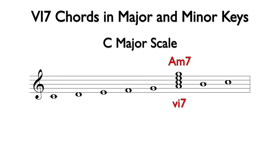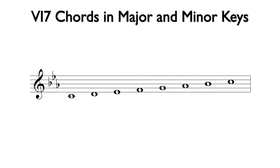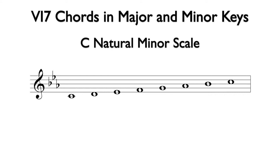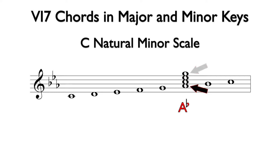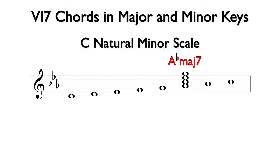The sixth minor seven chord comes from the sixth degree of any major scale. Now let's examine the sixth-seven chord possibilities in minor. Notice the key signature changed to three flats, so this is a C natural minor scale. The sixth chord is based off of A flat. Using the notes from the scale to build the seventh chord, we can add C, E flat, and G above the A flat note. The bottom three notes spell an A flat major triad, and the interval from A flat to G is a major seventh. This is A flat major seven, and we will use the uppercase sixth Roman numeral with MAJ and a seven for the analysis. The sixth major seven chord comes from the sixth degree of any natural minor scale.